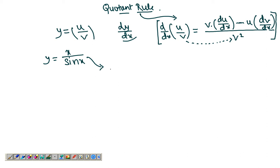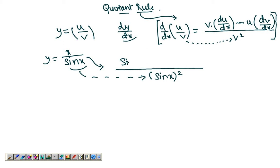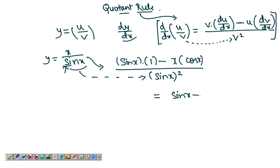Let's take this example. In the denominator we have the square of the function in the denominator, so this gives you sin squared x. And in the numerator, the function in the denominator remains as is. You take the derivative of the function in the numerator, which is 1. Then you take away the function in the numerator times the derivative of v, the function in the denominator, which is cos x. So this gives you sin x minus x cos x over sin squared x. That's the answer.